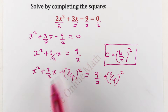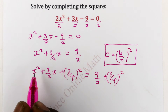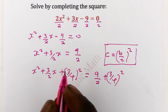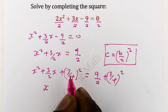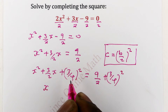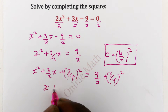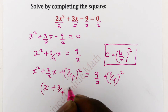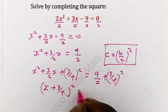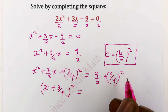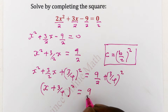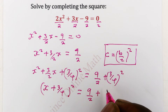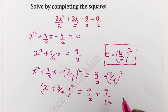The next thing is to form the perfect square on this side by taking the square root of x, which is x, and adding it to the square root of the new c — that is plus 3 over 4 — and squaring it. Then simplifying the other side, which will be 9 over 2 plus 9 over 16.